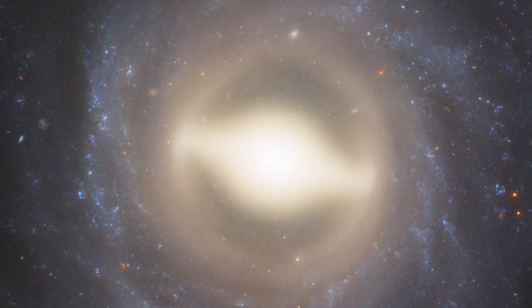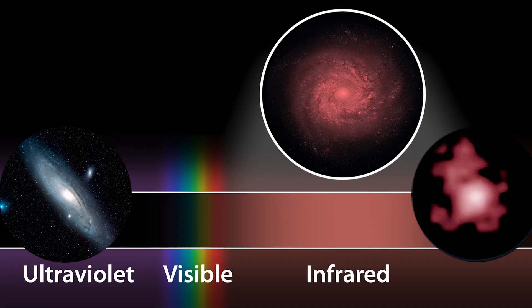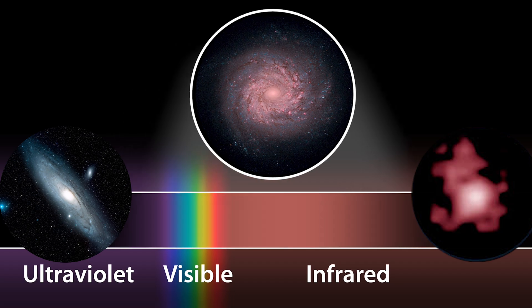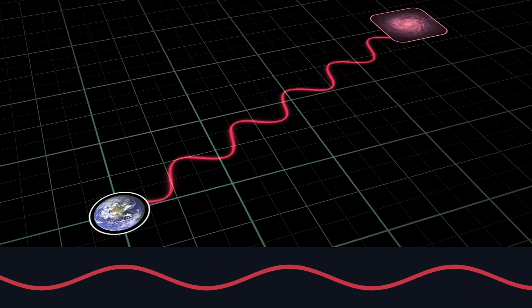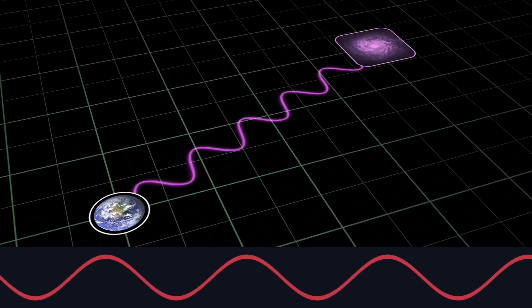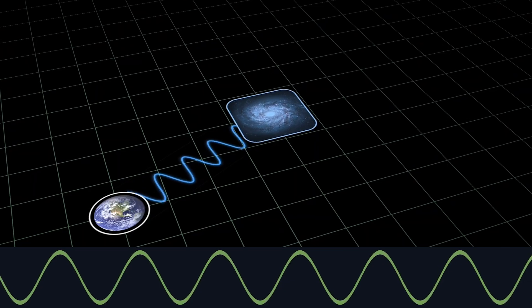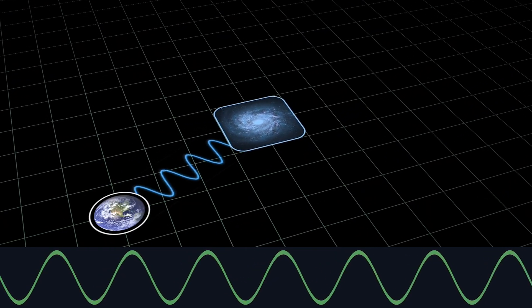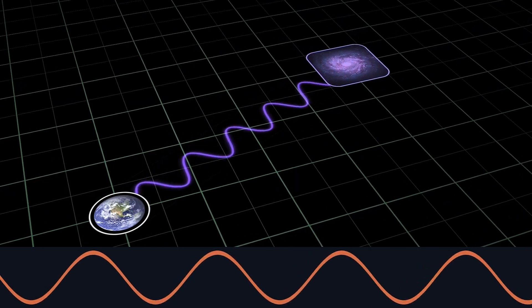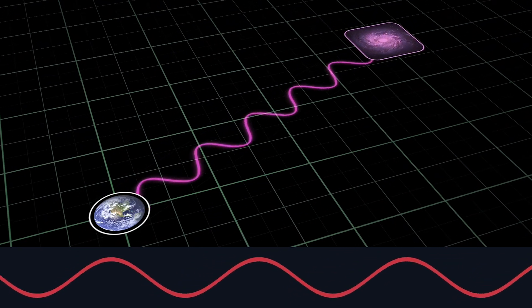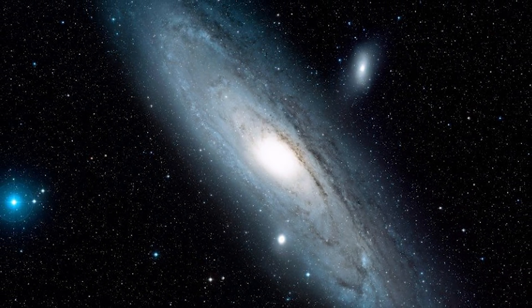He also observed a unique phenomena called redshift. He saw some galaxies are redshifted and some are blueshifted. When something comes closer to us, it becomes blueshifted because the light wave gets compressed. Oppositely, when something goes further away from us, it stretches the wavelength of light and becomes redshifted. For example, the Andromeda galaxy is coming towards us. We see it as blueshifted.